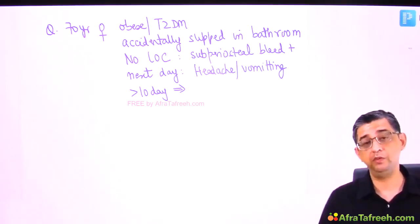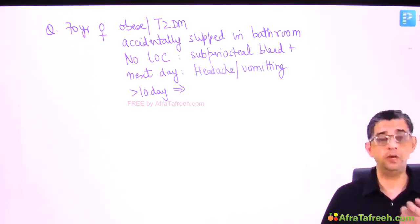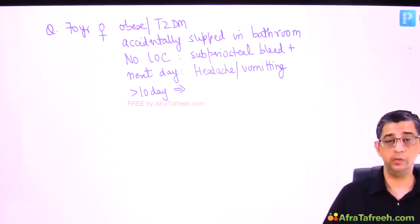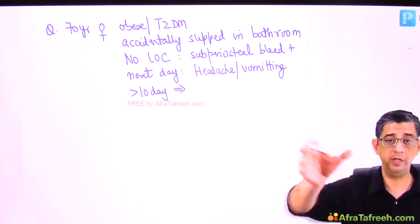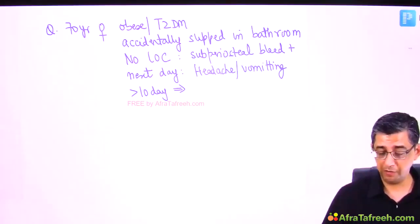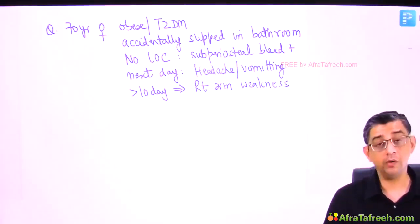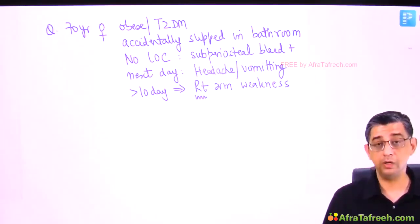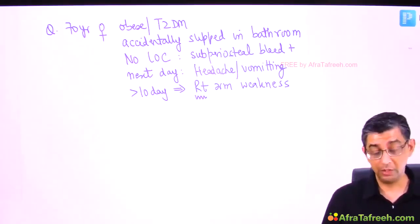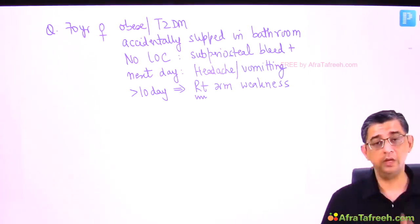Ten days pass. She's been enduring headache and vomiting, taking anti-emetics and painkillers. On the 10th day, her son or daughter brings her a cup of tea and notices she cannot raise her arm to take it — she has definitive right arm weakness. Alarm bells ring and she is finally brought to hospital.